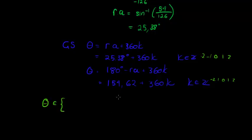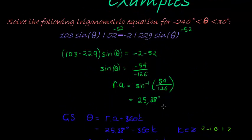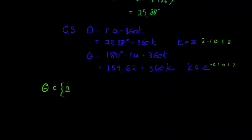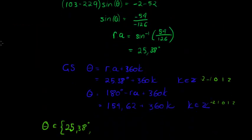One of the following values can be the value of theta. Theta can be 25.38 plus no rotations is still less than 30 degrees. So that's one possible solution. 25.38 is one possible solution. Adding one rotation will take me too far. I'll have definitely more than 30 degrees.